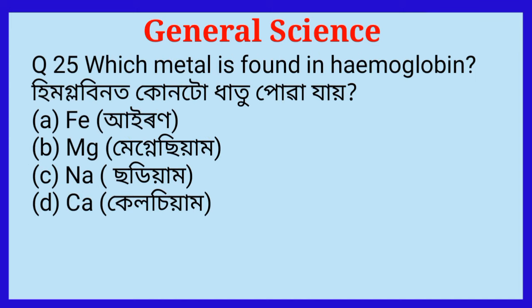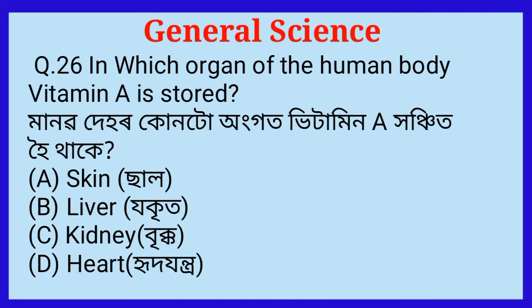Question number twenty-five: Which metal is found in hemoglobin? The answer is option A, iron. Question number twenty-six: In which organ of the human body is vitamin A stored? The answer is option B, liver.